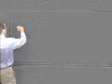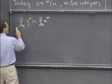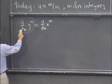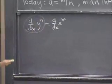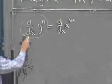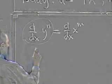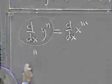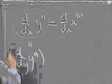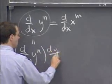And now you see this expression here requires us to do something we couldn't do before yesterday. Namely, this y is a function of x. So we have to apply the chain rule here. So this is the same as, this is by the chain rule now, d by dy of y to the n times dy dx.